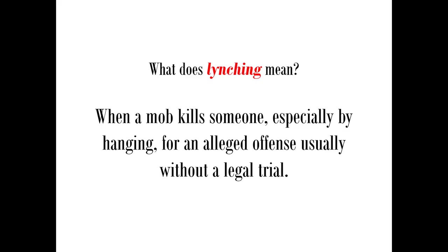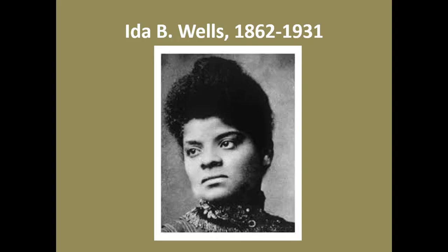A lynching is when a mob kills someone, especially by hanging, for an alleged offense, usually without a legal trial — vigilante justice. In the town where Ida lived, the only grocery market was on the white side of town, so blacks had to go into white communities to shop. Two of Ida's friends decided to open a grocery store in the black community, and they were successful. But when the white grocery store owners found out they were losing business, they went to the black store and lynched those two men right in front of Ida.